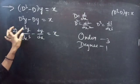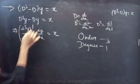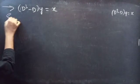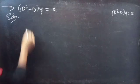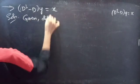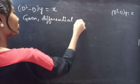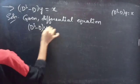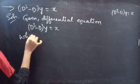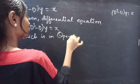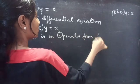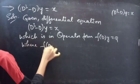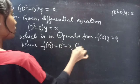Here, d³y/dx³ is the highest derivative, so the order is 3 and the degree is 1. We write the given differential equation as f(D)·y = Q, where f(D) = D³ - D and Q = x.